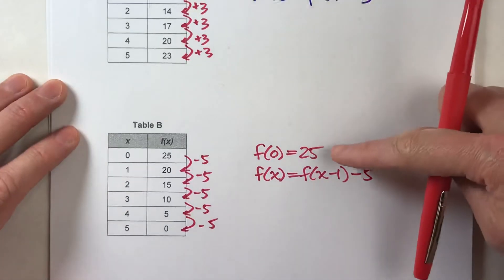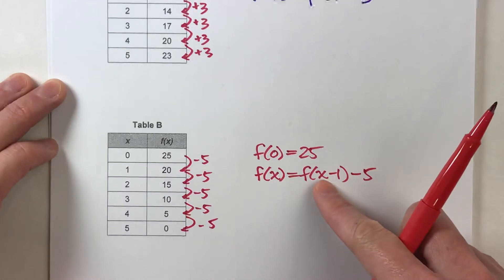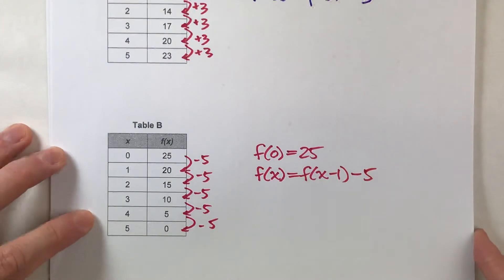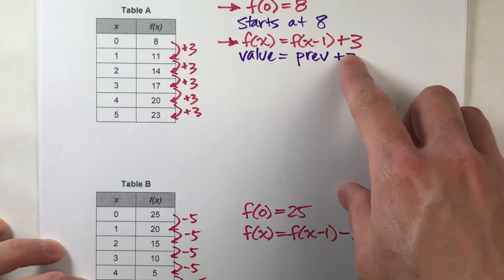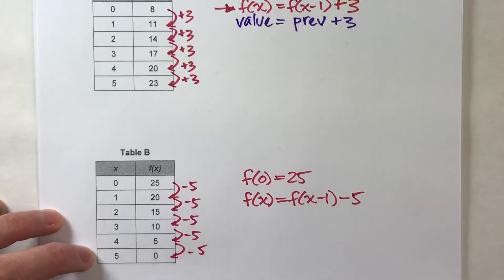So, this says that the pattern starts at 25, and to get any value, we take the previous one and subtract 5 from it. And, that's what a recursive equation will look like for a linear relationship. It will either repeatedly add to the previous value to get the current value, or it repeatedly subtracts from the previous value to get the current value.